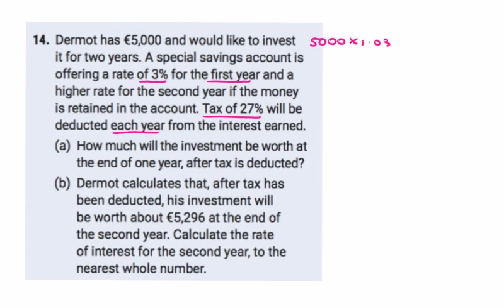Multiplying by one plus the interest rate gives us €5,150. The interest earned is €150, which is three percent of €5,000. Tax of 27% is deducted each year, so we're left with 73% of the interest. 150 multiplied by 73% equals €109.50. So Dermis has €5,109.50 left at the end of year one.